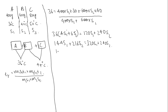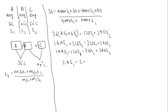We will get all S1 terms on one side. So 144S1 minus 120S1 equals 240S2 minus 216S2. This gives 24S1 equals 24S2, so S1 equals S2. This is equation 1.